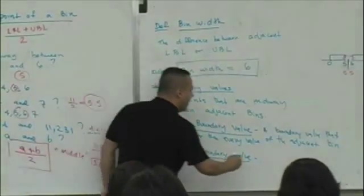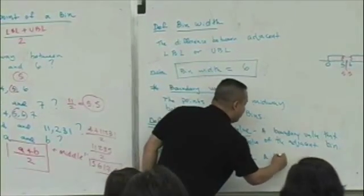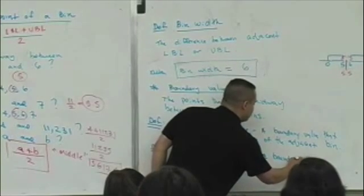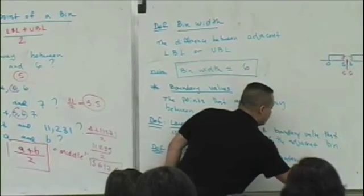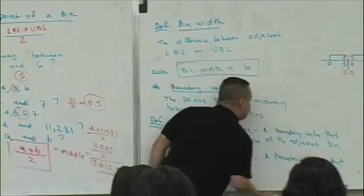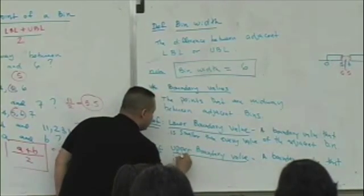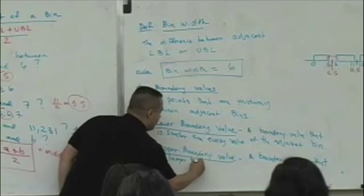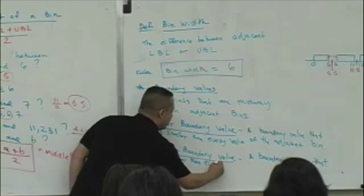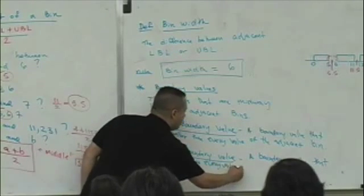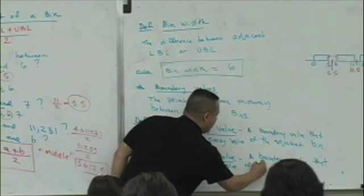An upper boundary value is simply a boundary value that is larger than every value of the adjacent bin.